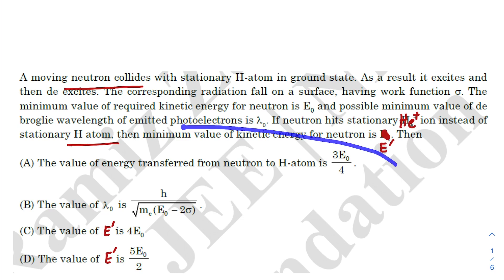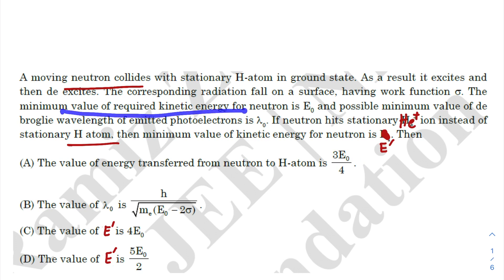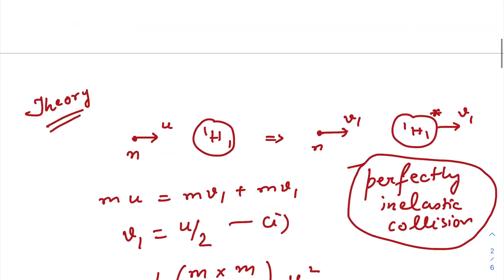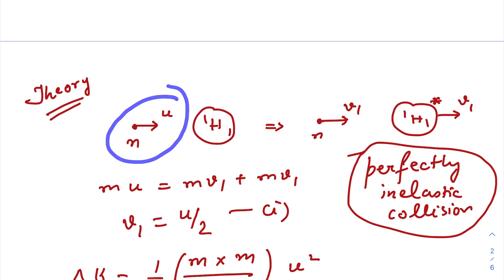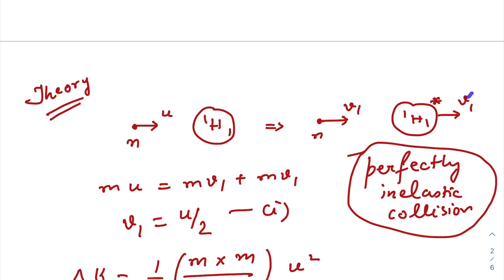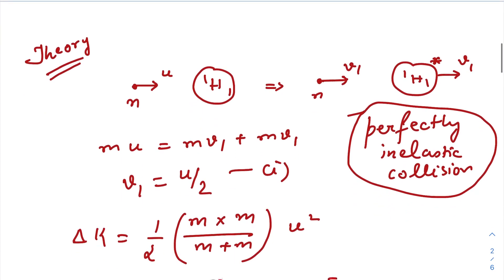Let's go through this one by one. The first option asks: what is the value of energy transferred from the neutron to the hydrogen atom — is it 3E₀/4? First, let's understand what E₀ is. E₀ is the minimum kinetic energy required for the neutron to excite the hydrogen atom, which was initially in the ground state. Since we're talking about minimum energy, the maximum amount of energy from the neutron should be lost — so the collision must be perfectly inelastic.